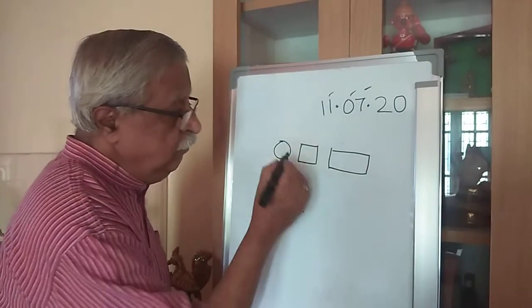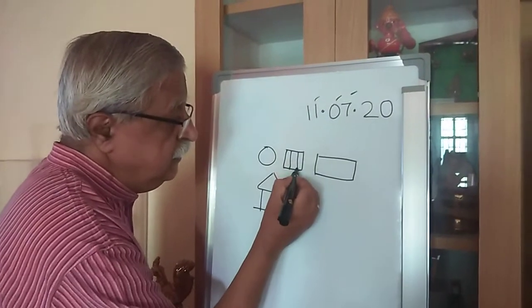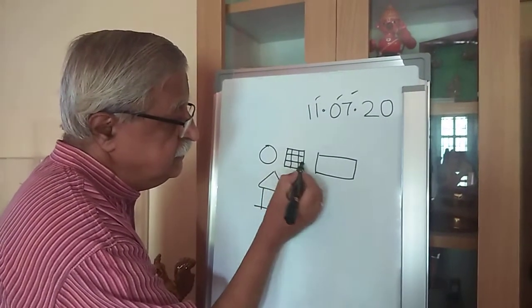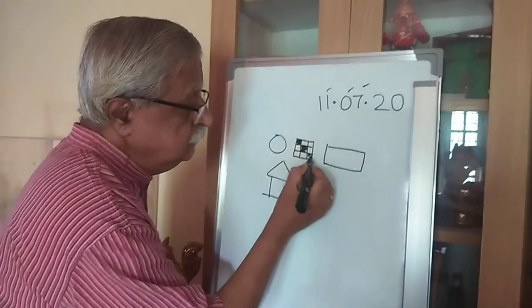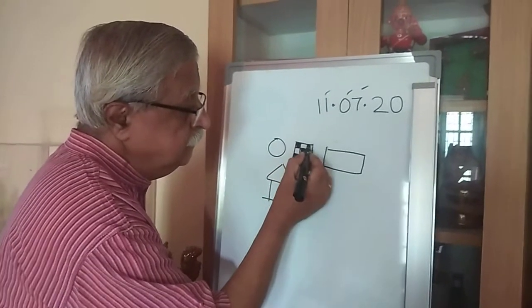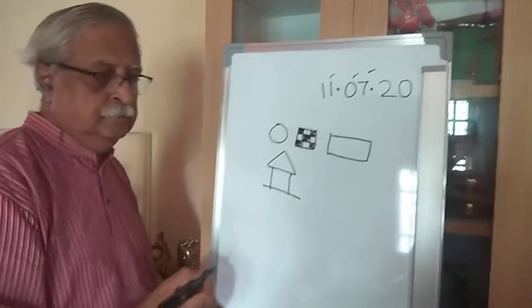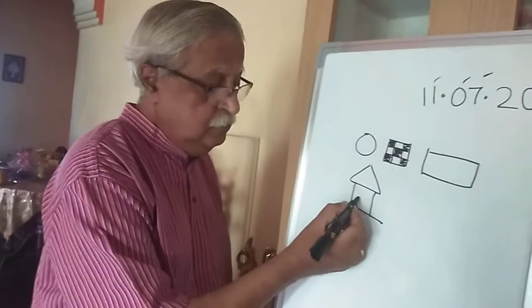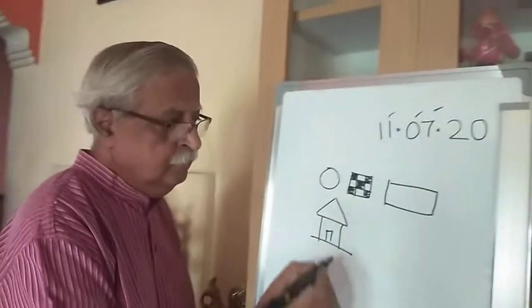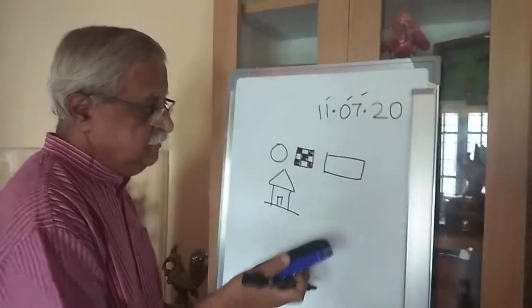You can always make so many things with this. For example, I imagine it to be a Rubik's cube. So we can do so many things with these shapes.